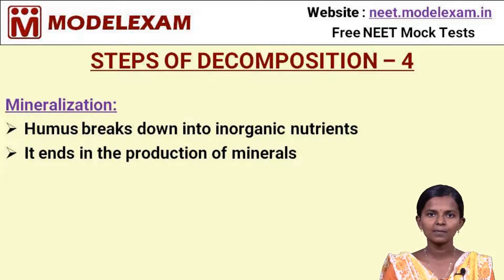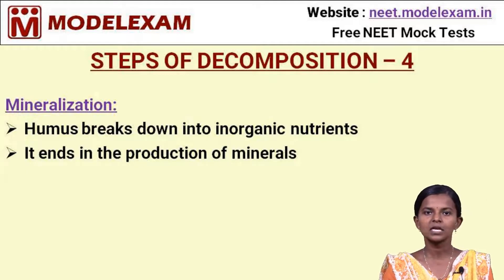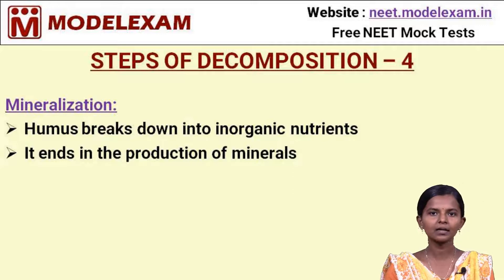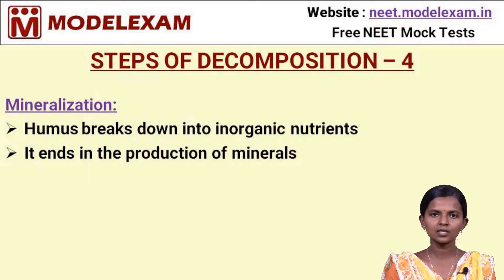The final step of decomposition is mineralisation. This involves the breakdown of humus, the dark-coloured accumulated part of litter, into inorganic nutrients. These inorganic nutrients end in the production of minerals. These minerals are used by plants for their nutrient consumption, after which the processes of the ecosystem continue.